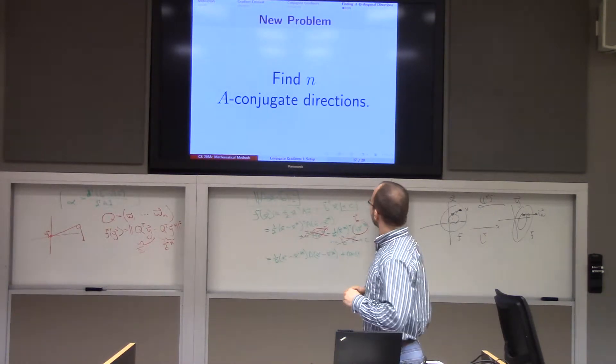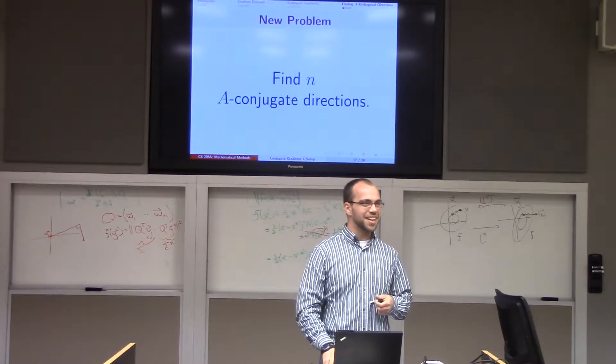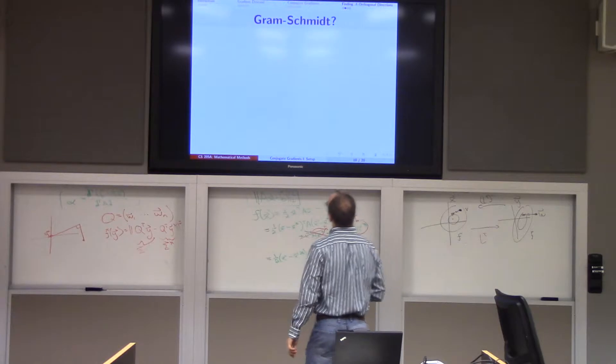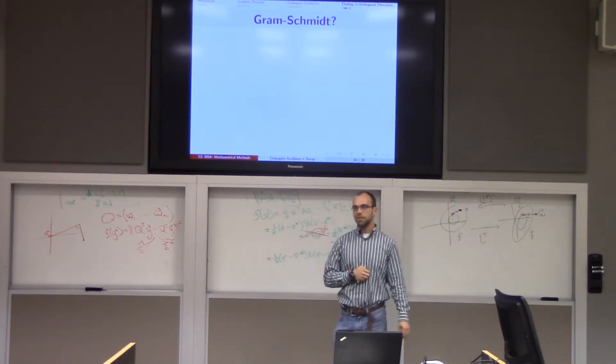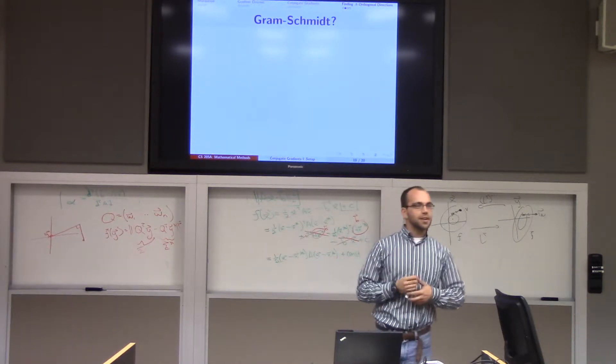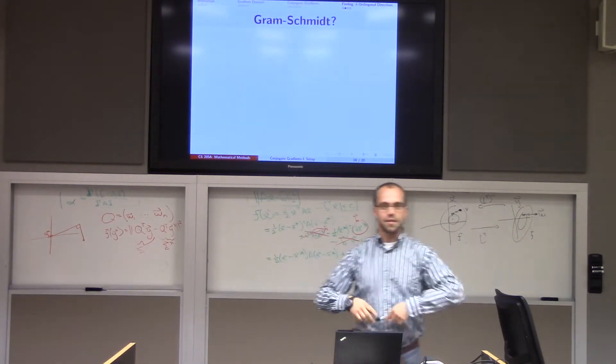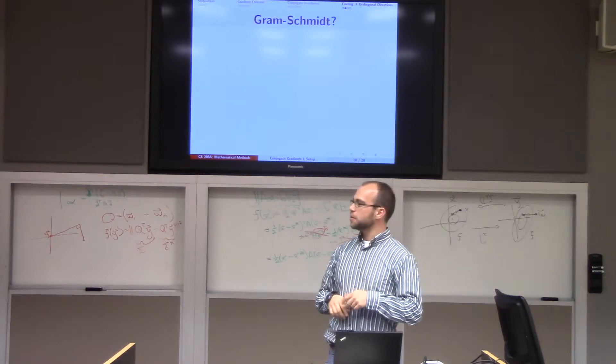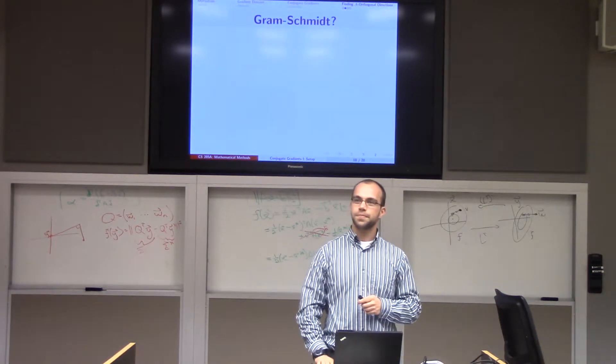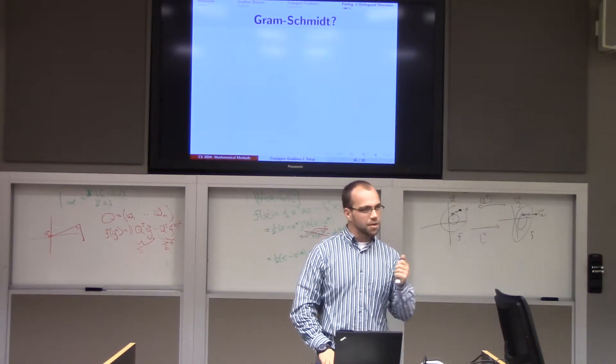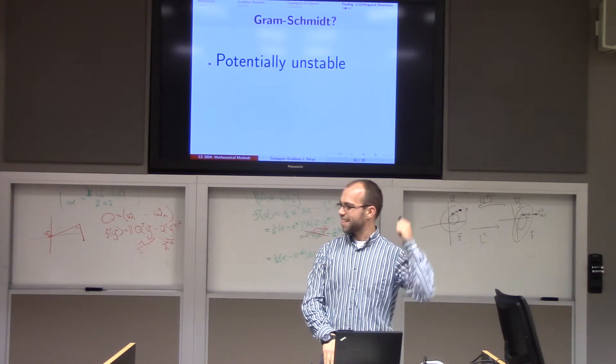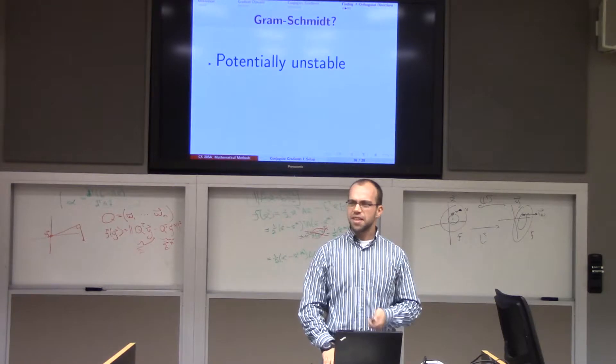So our new problem is to actually find these A-conjugate directions. I haven't told you how to do that. And so the initial question you might ask is, well, when we talk about QR, we had Gram-Schmidt, we had Householder, we had Givens rotations, actually we didn't have those, but we could have, and all of these were different strategies that just took some random set of vectors and made them orthogonal. And you'll show in your homework that, in fact, you can take Gram-Schmidt and use it to make vectors A-orthogonal. But this is a little bit of a problem, because, for one thing, we already know that Gram-Schmidt isn't particularly stable. Hopefully that's something that's ingrained by now.